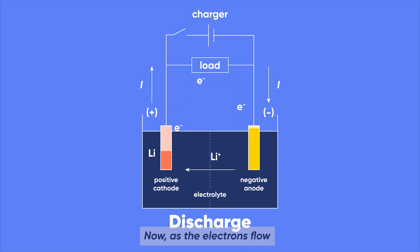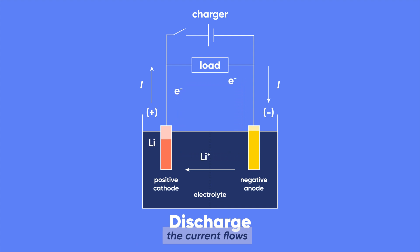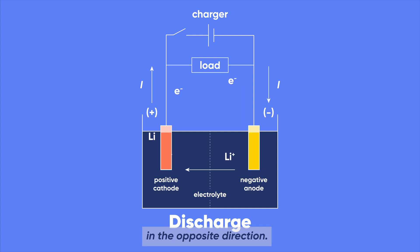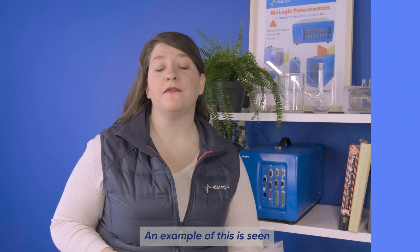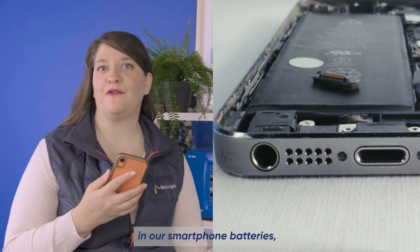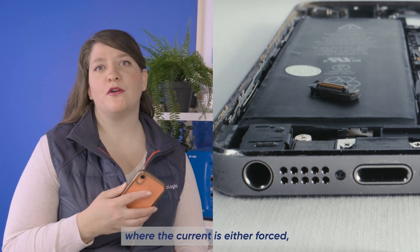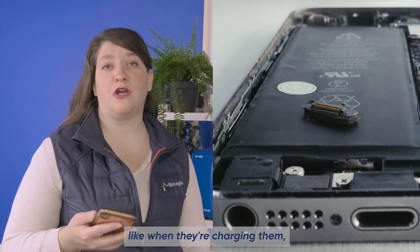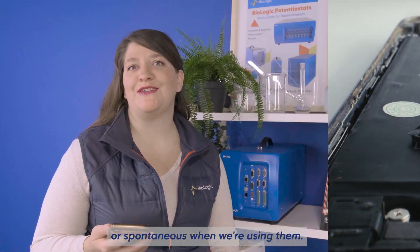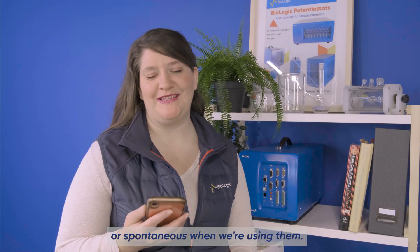As the electrons flow through an external circuit, the current flows in the opposite direction, and this can be in a forward or reverse direction. An example of this is seen in our smartphone batteries, where the current is either forced — like when we're charging them — or spontaneous when we're using them.